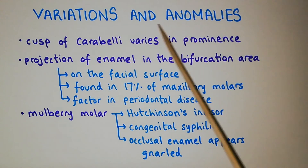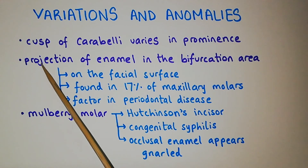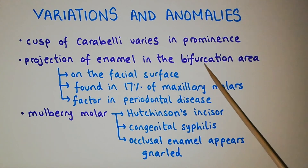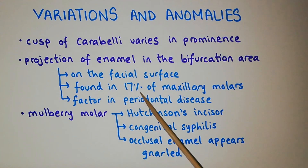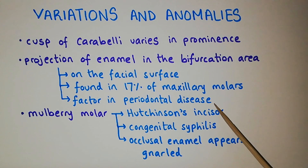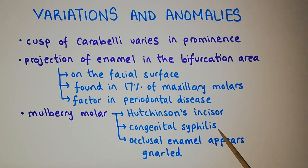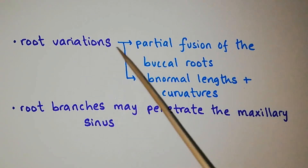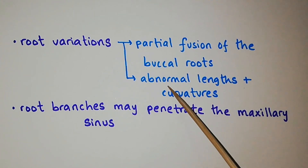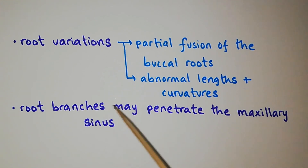Coming to the variations and anomalies, the cusp of Carabelli varies in prominence. There is a sharp projection of enamel in the bifurcation area on the facial surface, found in 17% of maxillary molars, which may be a factor in periodontal disease in this area. The mulberry molar, which is the posterior counterpart of Hutchinson's incisor, is sometimes present due to congenital syphilis; in this condition, the cusps are more centrally located and the occlusal enamel appears gnarled. The root also shows variations, with partial fusion of the buccal roots and abnormal lengths and curvatures of roots. The root branches may also penetrate the maxillary sinus.